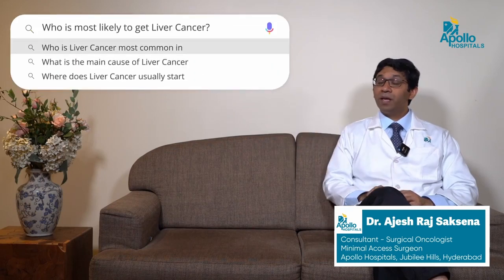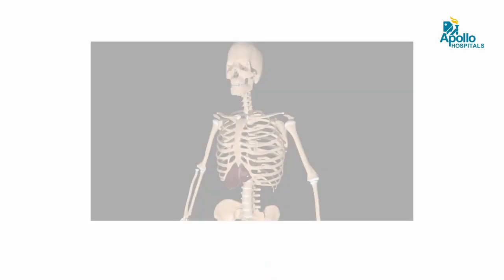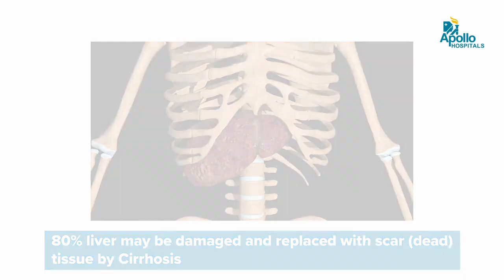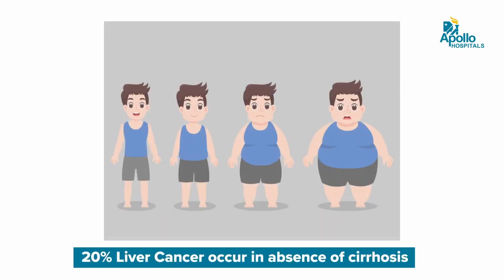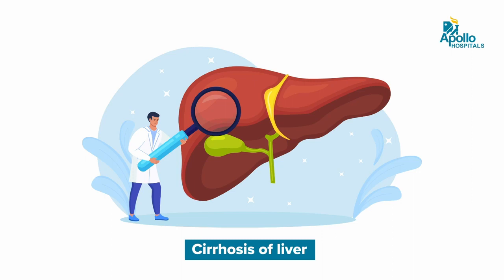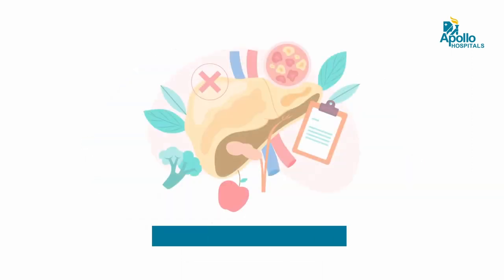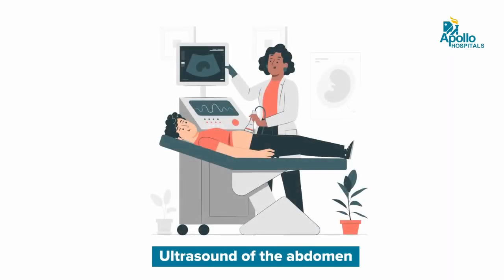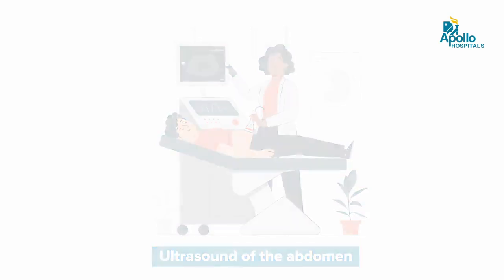Who is most likely to get liver cancer? About 80% of liver cancers occur with a background of cirrhosis, meaning the liver has become fibrosed or scarred, while about 20% can still occur without cirrhosis. Those with underlying cirrhosis, chronic hepatitis B or C infection, alcohol consumption, or obesity are at increased risk and need to periodically get an ultrasound of the abdomen to keep their liver in check.